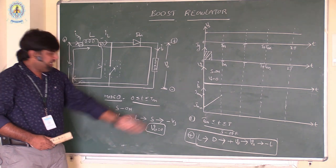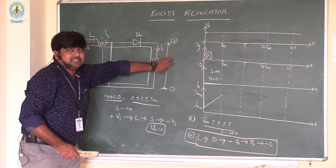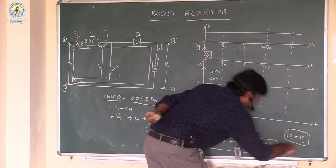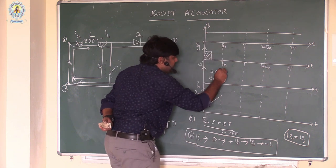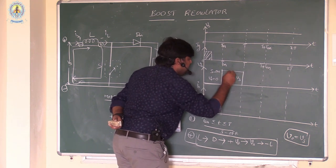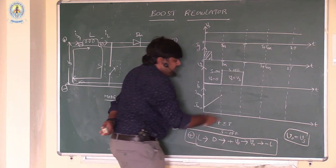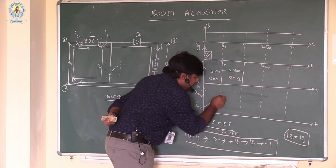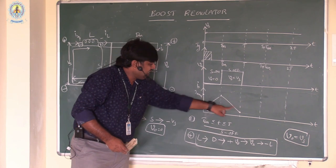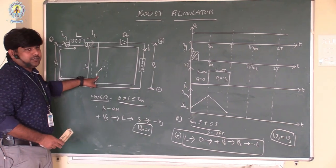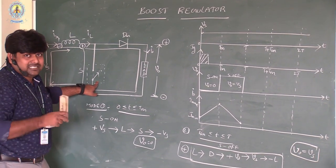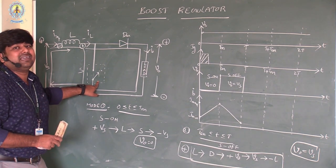This is the current direction in Mode 2. The output voltage across the load equals the supply voltage — V0 equals Vs. In this mode, the inductor current decreases from maximum to minimum. According to the current limiting control strategy, when the current is minimum, the switch is immediately turned on again. This control strategy is called the current limiting control strategy.